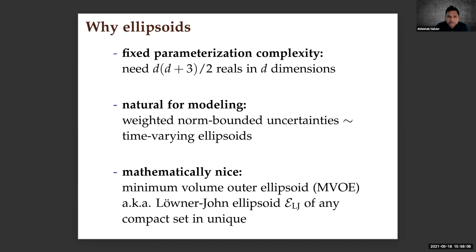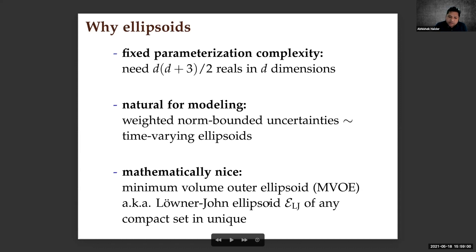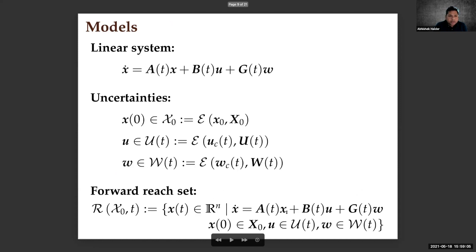With polytopes, depending on the number of vertices and faces, you may need to store variable numbers of matrices and vectors. The second attractive point is that ellipsoids are natural for modeling in systems control engineering: weighted norm-bounded uncertainties are naturally represented as time-varying ellipsoids. For promoting tightness, a typical approach is to compute the minimum volume outer ellipsoid (MVOE), also called the Löwner-John ellipsoid, denoted E_LJ. It is known that the Löwner-John ellipsoid of any compact set is unique.